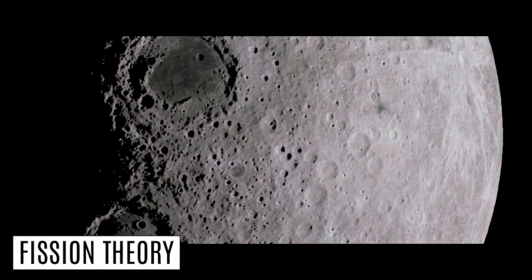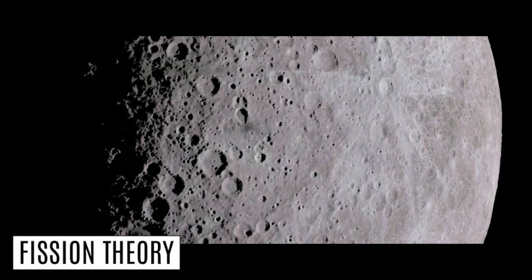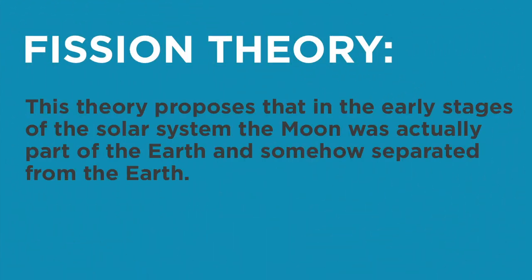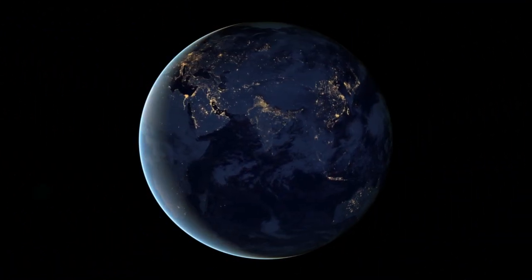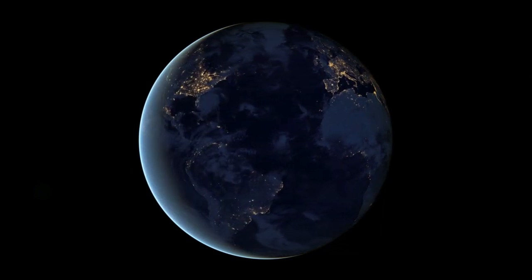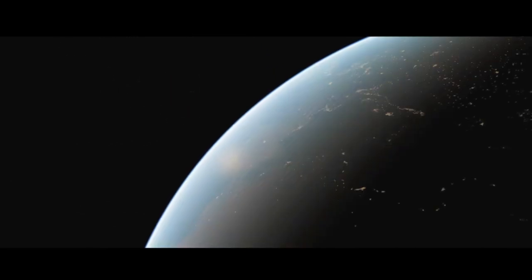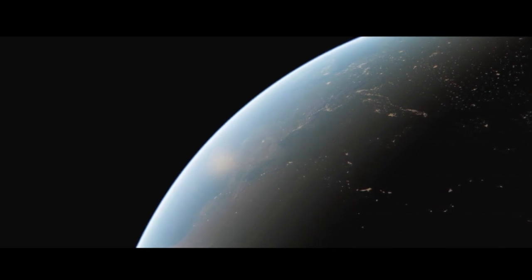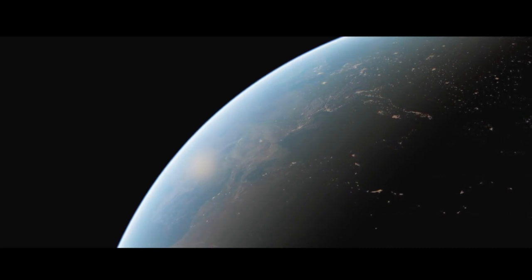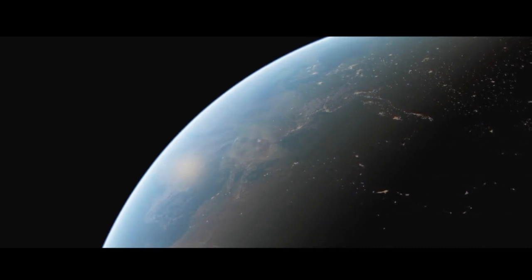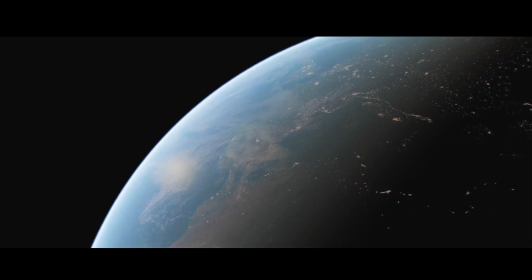The first theory is called the Fission Theory, suggested by Charles Darwin's son George Darwin in the 19th century. It proposes that in the early stages of the solar system, the Moon was actually part of the Earth — that the Earth was somehow spinning extremely fast and flung off a part of its surface that became the Moon. People look at the Pacific Ocean and say that could be where the Moon came from. This theory seems plausible since the Moon's composition is very similar to Earth's mantle. However, the main problem is that it doesn't explain how the Moon's material received that extra baking — in other words, how the Moon got rid of the volatiles.